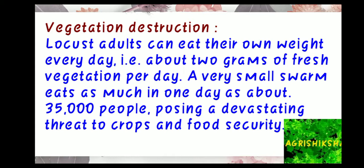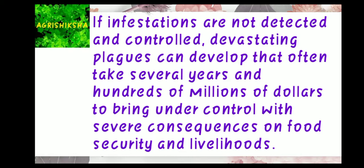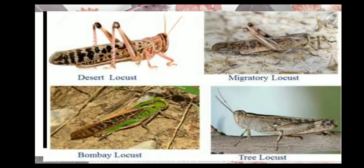Regarding vegetation destruction, locusts destroy all fodder and crops that come in their way. A locust can eat its own weight every day — about two grams of fresh vegetation per day. A very small swarm eats as much as about 35,000 people, posing a devastating threat to crops and food security. If infestations are not detected and controlled, devastating plagues can develop that often take several years and hundreds of millions of dollars to bring under control, with severe consequences on food security and livelihoods.